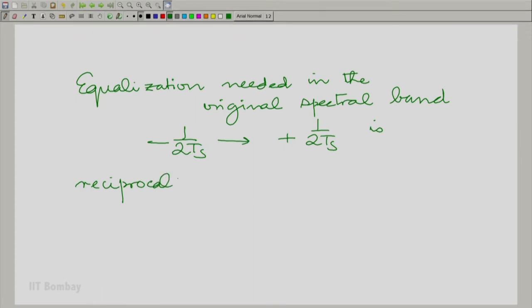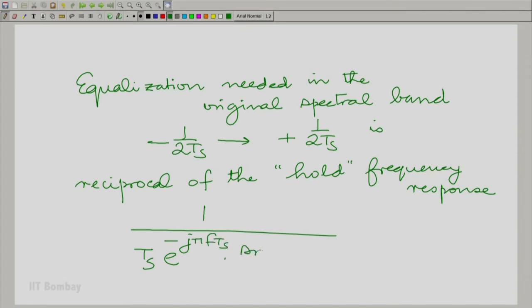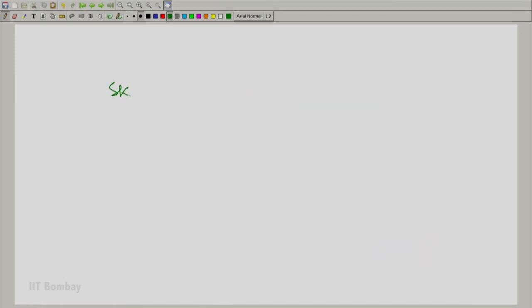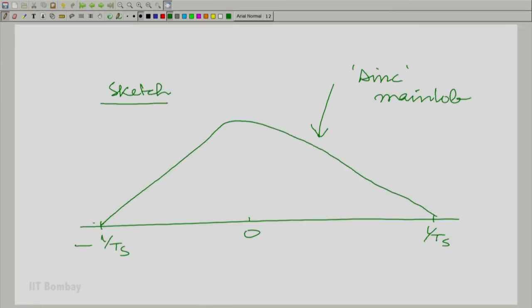It is essentially the reciprocal. The reciprocal of the hold system function, the reciprocal of the hold frequency response. Essentially one by that frequency response. Now, of course, you cannot let this expression apply for all f because there are nulls. This would only apply in a certain zone. We can even sketch it. We can get an idea of how it will look.